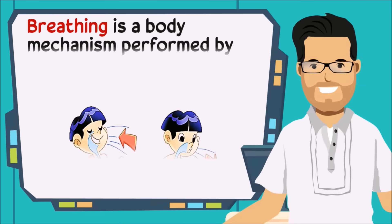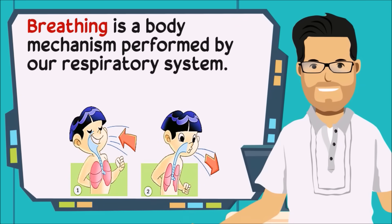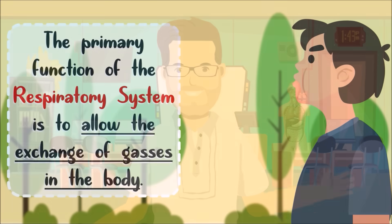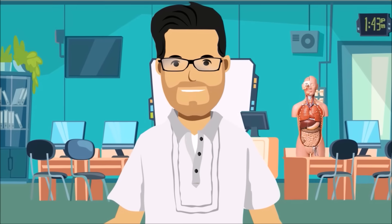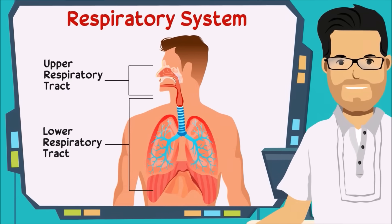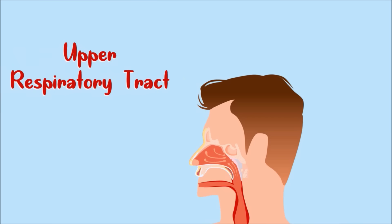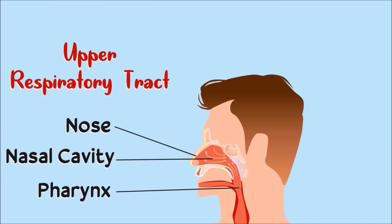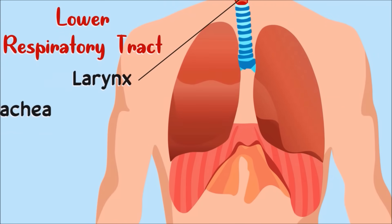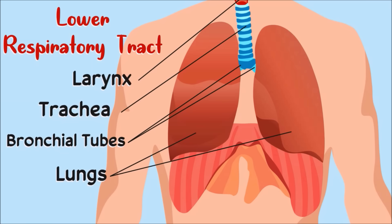Breathing is a body mechanism performed by our respiratory system. The primary function of the respiratory system is to allow the exchange of gases in the body — specifically, it distributes oxygen to the different parts of the body and releases carbon dioxide out of the body. The respiratory system has an upper tract and a lower tract. The upper tract consists of the nose, nasal cavity, and pharynx. The lower tract consists of the larynx, trachea, bronchial tubes, and lungs.